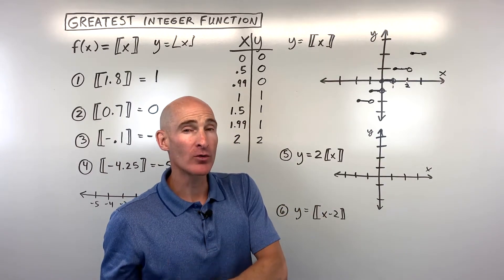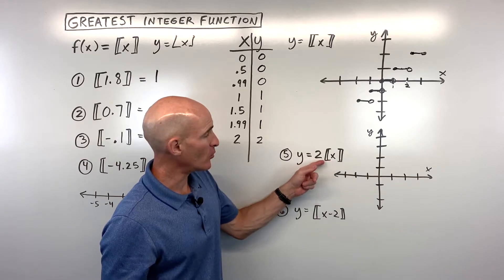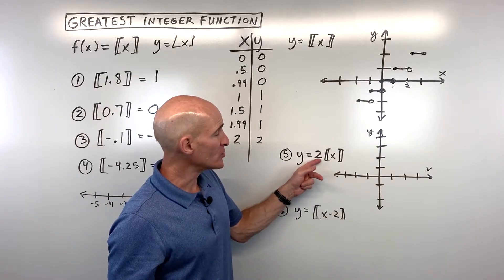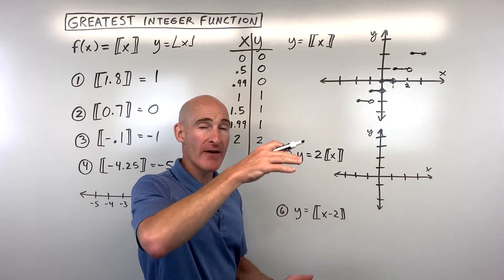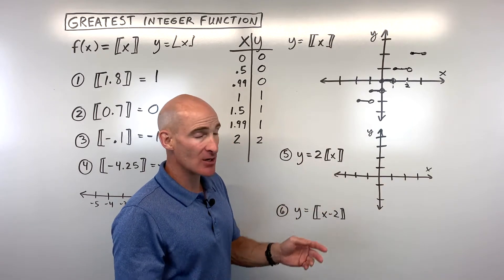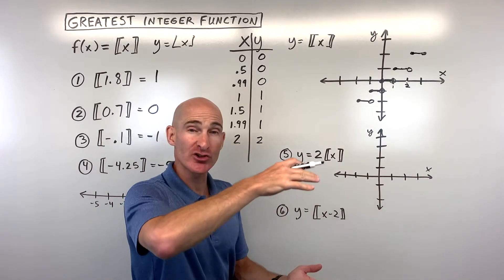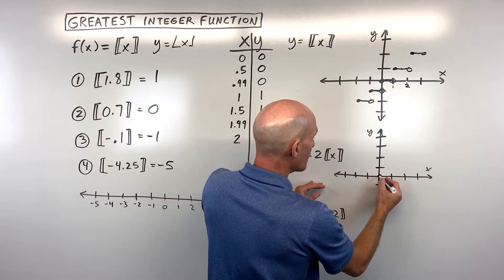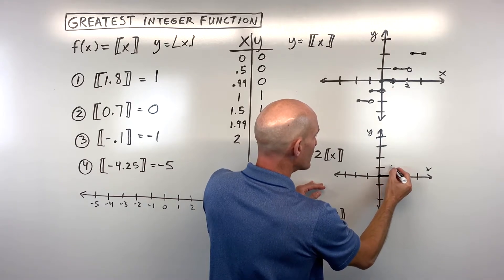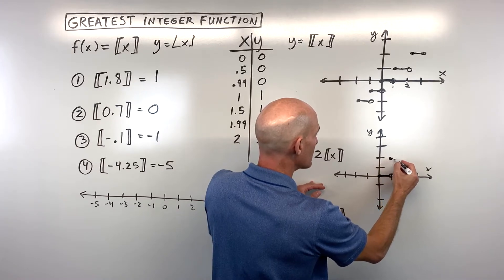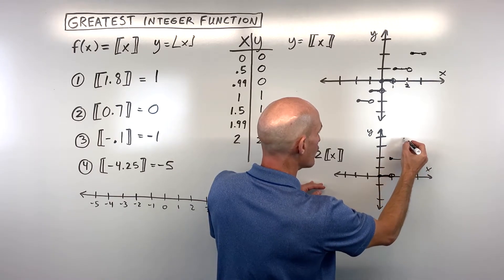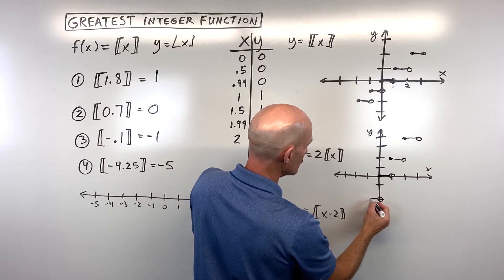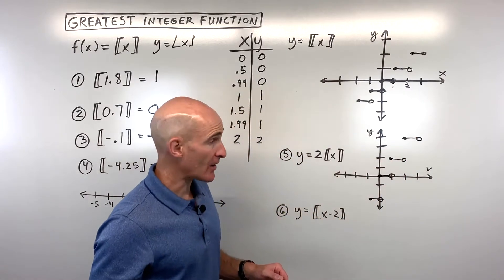Now talking about transformations — if you had a 2 in front, what would that 2 do to the parent function? Well, notice it's not grouped with the x, so it's going to affect the y values. It's going to multiply the y values by 2 — a vertical stretch by a factor of 2. That means the stairs are going to go up not 1 each time, but 2 each time. So that step is at 2, then it jumps up to 4, then up to 6. Going the other way, it'd be at negative 2.